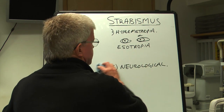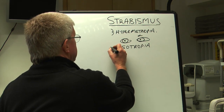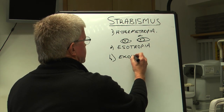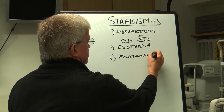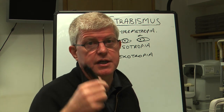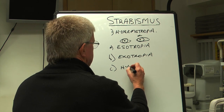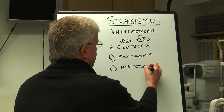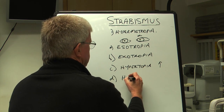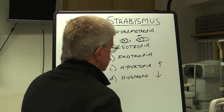The different types of tropia are: esotropia, where the deviation is inward toward the nose; exotropia, where the deviation is divergent — the eye is pointing outwards; hypertropia, where the deviation is upward; and hypotropia, where the deviation is downward. Usually it's problems with the nerves that cause hypertropia and hypotropia.